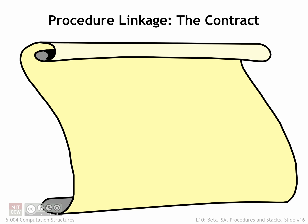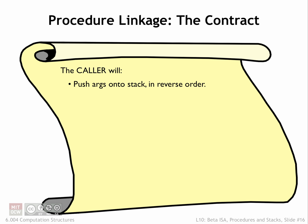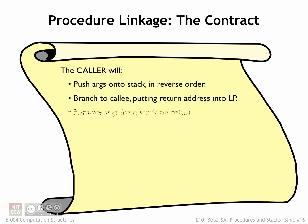Here's our final contract for how procedure calls will work. The calling procedure will push the arguments onto the stack in reverse order, branch to the entry point of the callee, putting the return address into the linkage pointer. When the callee returns, remove the argument values from the stack.